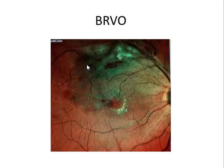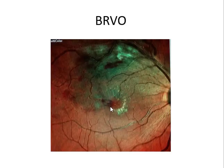This multicolor picture shows vein occlusion in the right eye along the supero-temporal blood vessels, with cotton wool spots, retinal hemorrhages, and exudates in the macular area along with some hemorrhage near the fovea. Note that this is a multicolor image, not a standard fundus photograph.